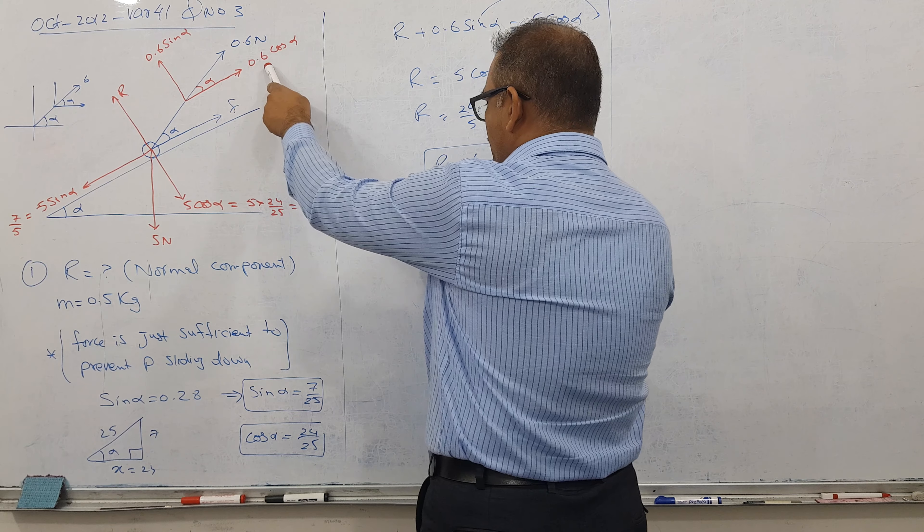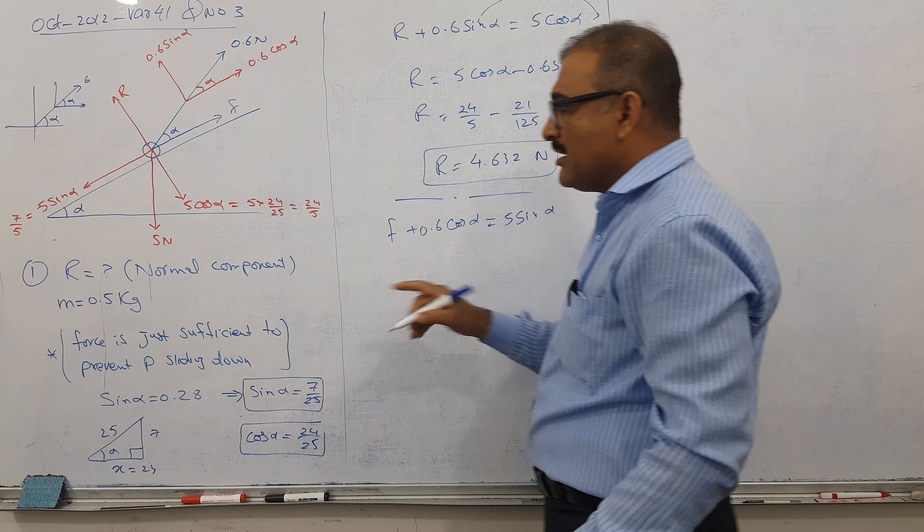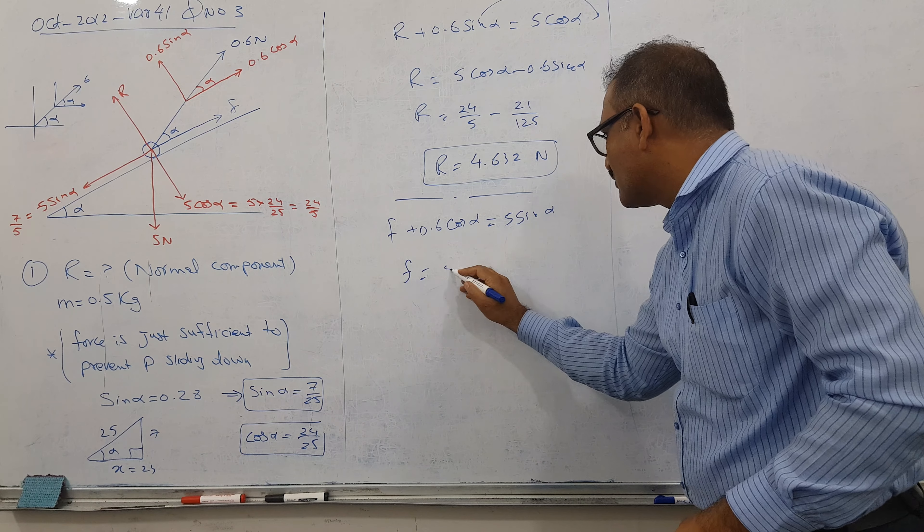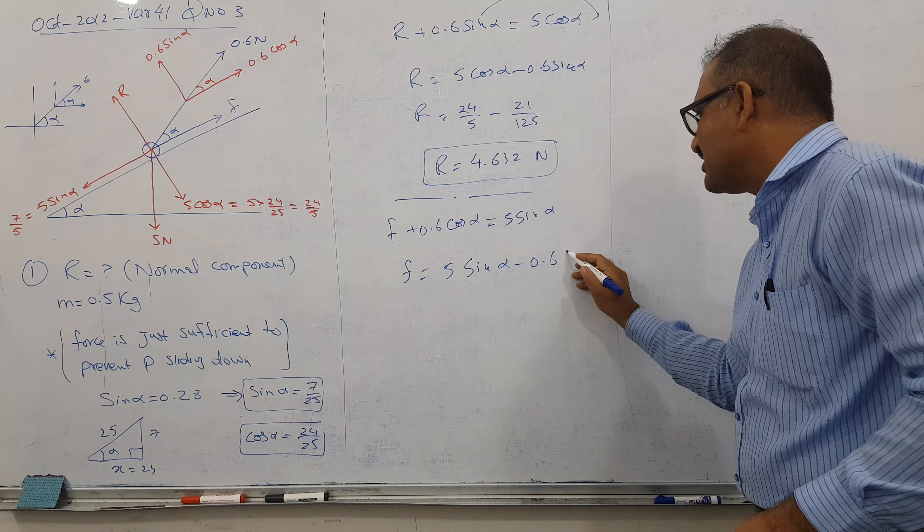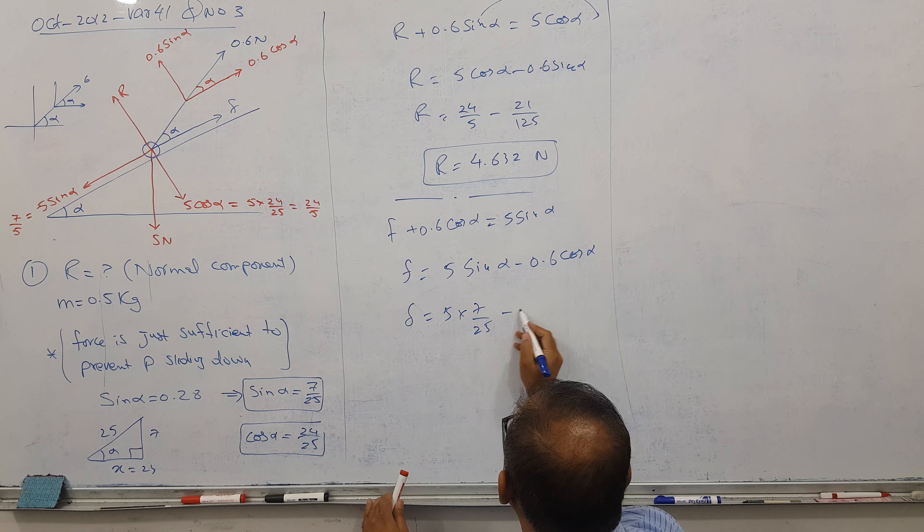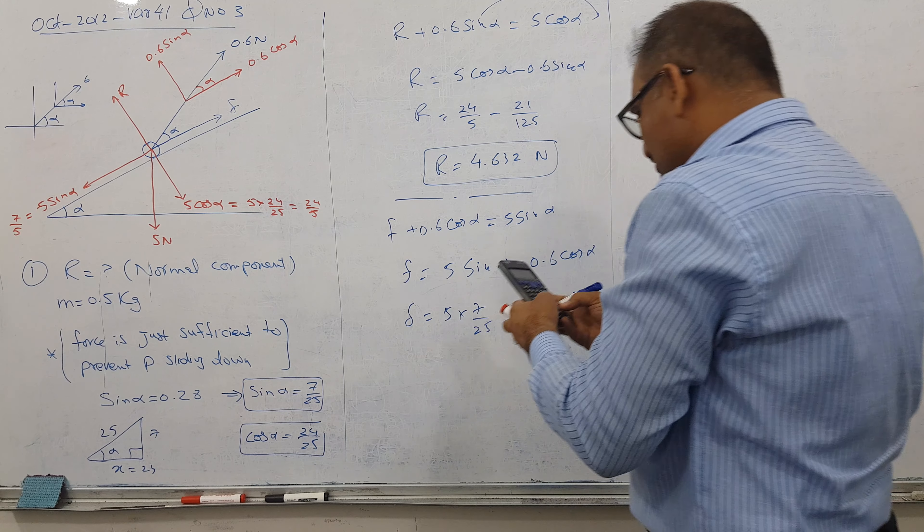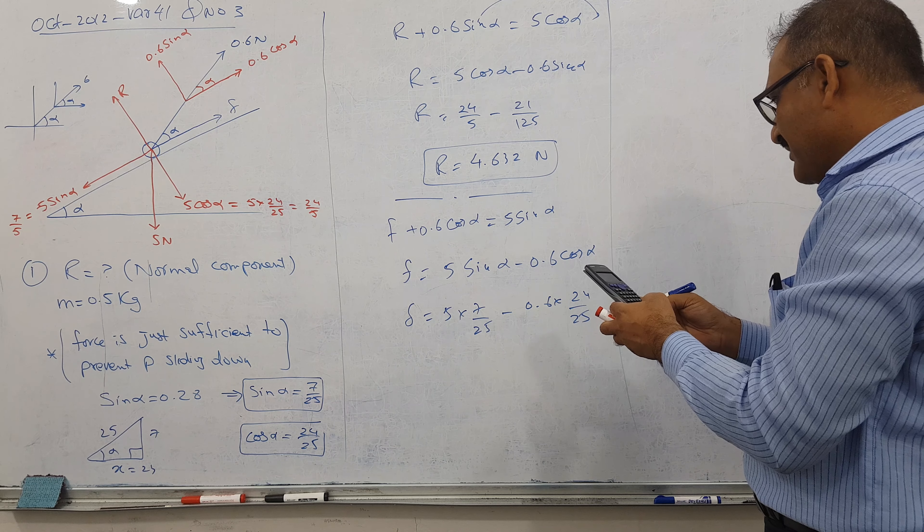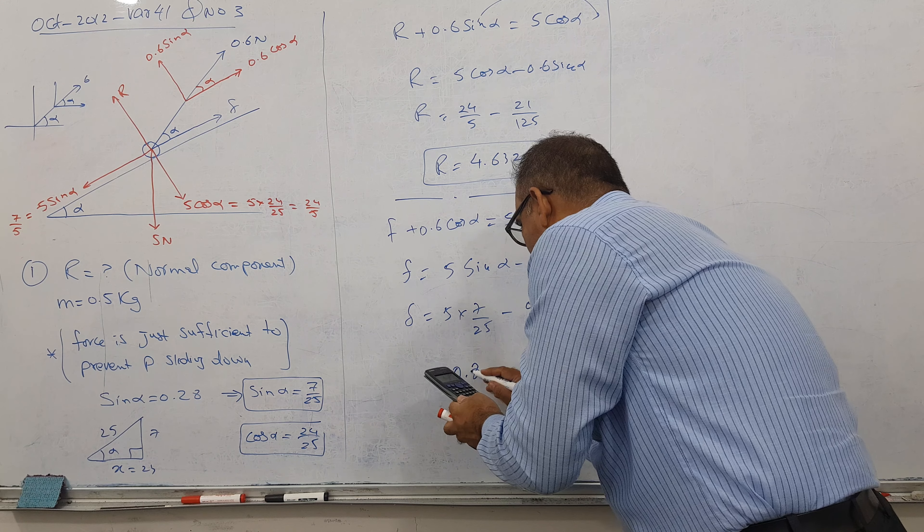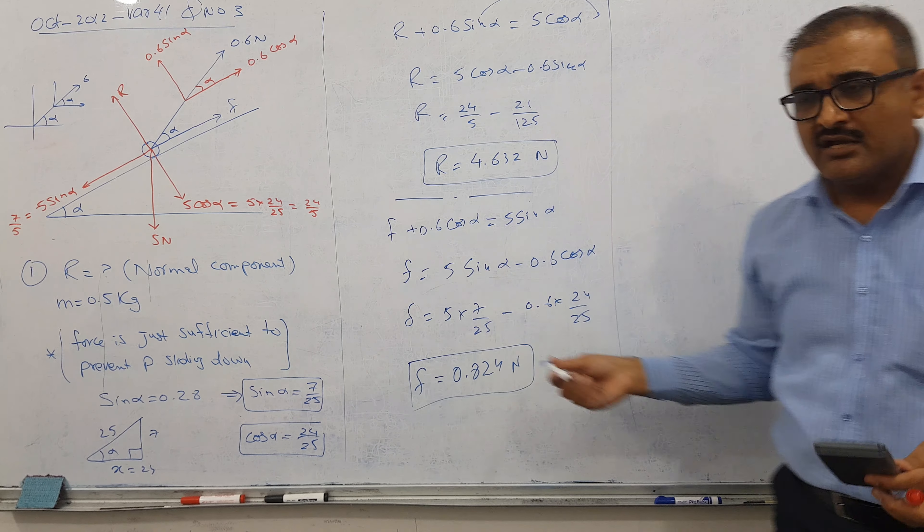When we say force is just sufficient to prevent sliding down, just about to slip down, I can say the friction will be upwards. Friction is upward. So can I say this F plus 0.6 cos alpha is equal to 5 sin alpha? The system is in equilibrium. Bring it here, so F equal to 5 sin alpha minus 0.6 cos alpha. Replace values please. 5 sin alpha value is 7 by 25 and cos value is 24 over 25. I type all together. 35 by 25 minus 0.6 times 24 divided by 25, and answer is coming 0.824 newtons.